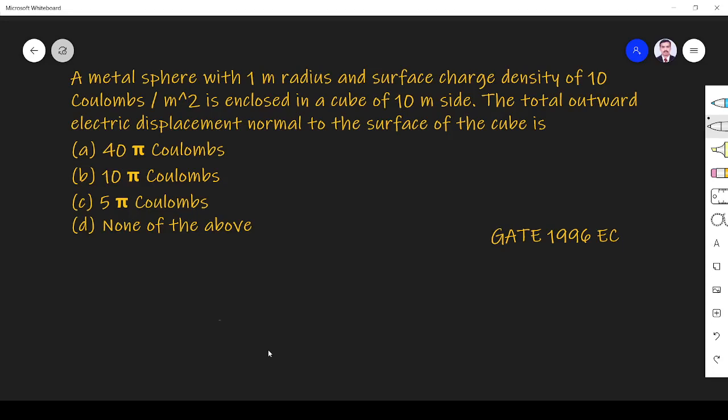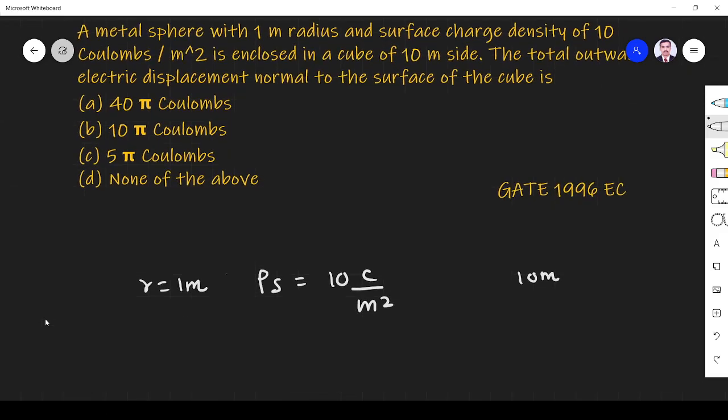The question is: a metal sphere with 1 meter radius and surface charge density ρ equals 10 coulombs per meter squared is enclosed by a cube of 10 meter side. What is the total outward electric displacement normal to the surface of the cube?